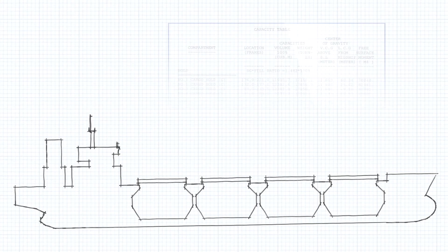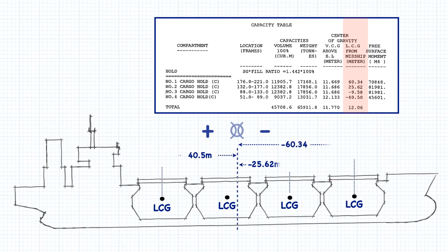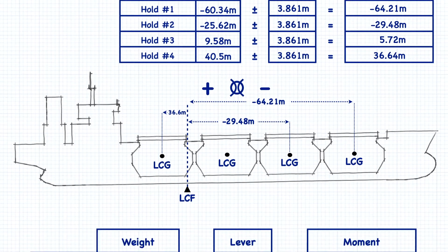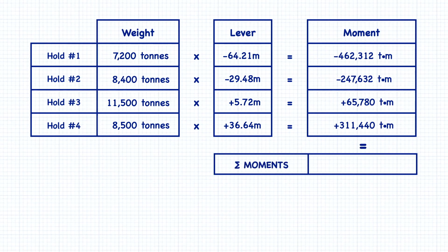From another section of the stability book we can get the ship's capacity table. This table shows us information about the volumes and locations of each cargo tank, ballast tank, fuel tank, and water tank. We use this table to determine the longitudinal centers of gravity of each hold, which are measured from midships. Remember though, that our LCF at this displacement is not at midships — it's further aft. We have to add or subtract the distance of the LCF from midships when we're calculating our levers. Now that we have both our cargo amounts and the levers for each hold, we can calculate the turning moments for each hold and add them all up to get a net trimming moment of negative 332,724 ton meters.